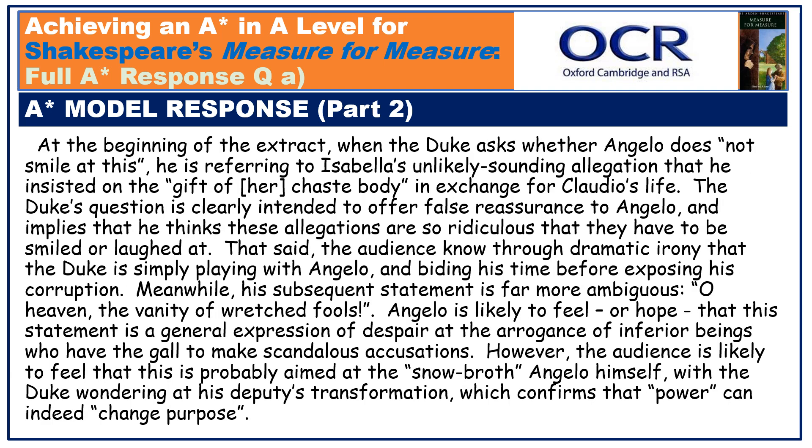At the beginning of the extract, when the Duke asks whether Angelo 'does not smile at this,' he is referring to Isabella's unlikely-sounding allegation that he insisted on the gift of her chaste body in exchange for Claudio's life. The Duke's question is clearly intended to offer false reassurance to Angelo, and implies that he thinks these allegations are so ridiculous that they have to be smiled or laughed at. That said, the audience know through dramatic irony that the Duke is simply playing with Angelo and biding his time before exposing his corruption.